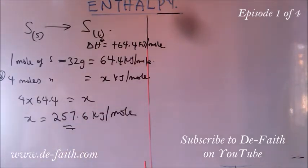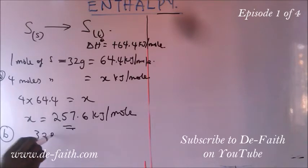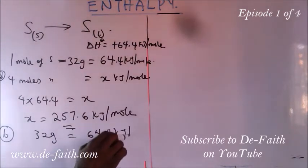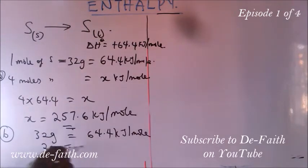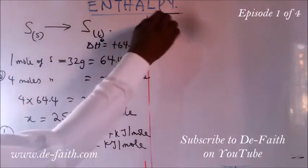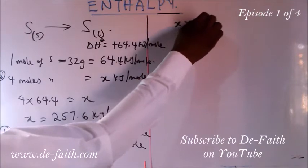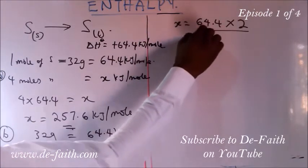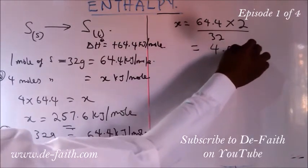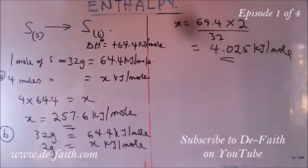For part (b), the heat required to fuse 2 grams of solid sulfur: we relate 32 grams to 64.4 kJ per mole. If we have 2 grams, we cross-multiply: x equals 64.4 multiplied by 2 divided by 32. That gives 4.025 kilojoules per mole, which is the heat required to fuse 2 grams of sulfur.